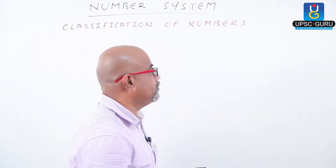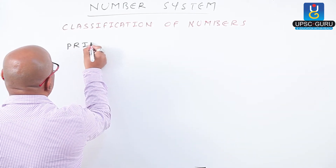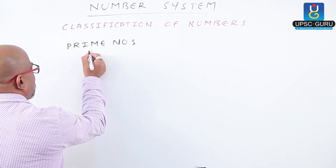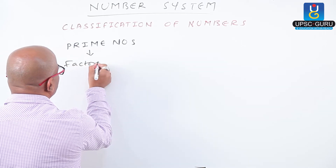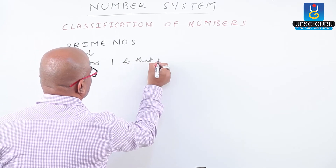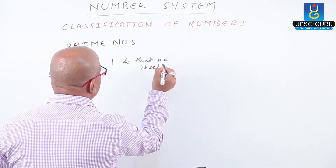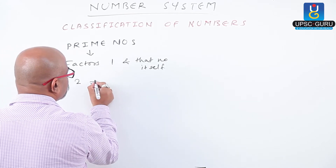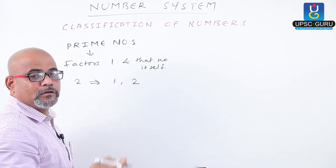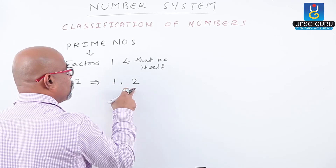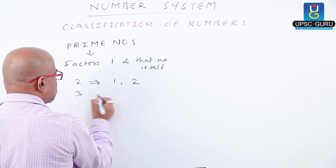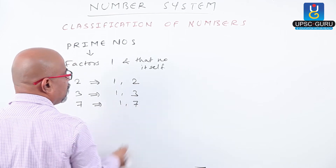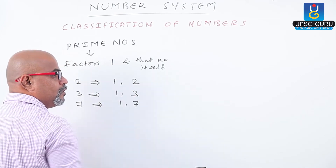Next, we look at prime numbers. Prime numbers are those numbers which have factors 1 and that number itself — they are called prime numbers. For example, 2: the factors of 2 are 1 and 2, so 2 is a prime number. Similarly, 3 has factors 1 and 3, and 7 has factors 1 and 7. Therefore, all these are prime numbers.